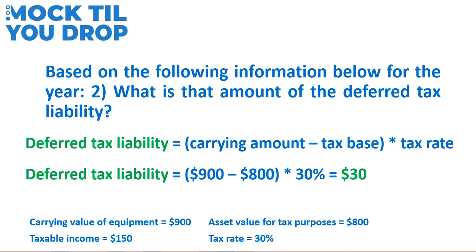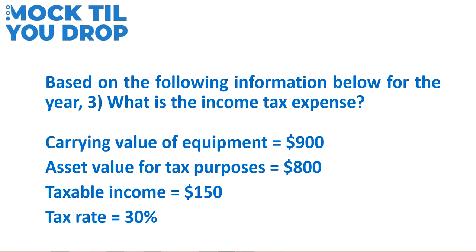What does this $30 deferred tax liability mean? Assuming the company will be in business in the future — in other words, it's a going concern — and the difference is temporary, the company creates this $30 deferred tax liability, meaning it will eventually owe this amount in taxes. Now let's answer the final question: what is the income tax expense? This appears on the income statement and is a combination of income taxes payable — what it actually pays its taxing authority — and any changes in deferred tax assets or liabilities. We determine income taxes payable and add the deferred tax liability calculated earlier.